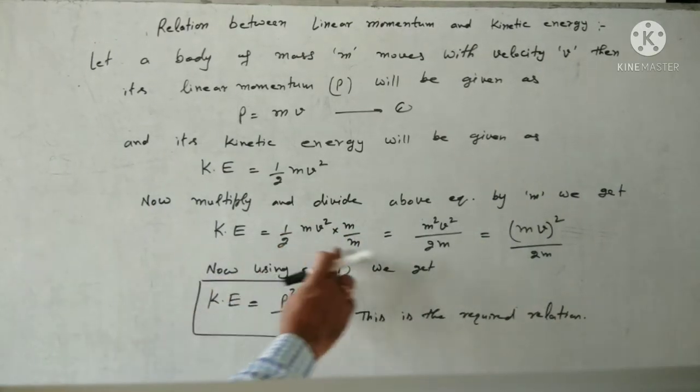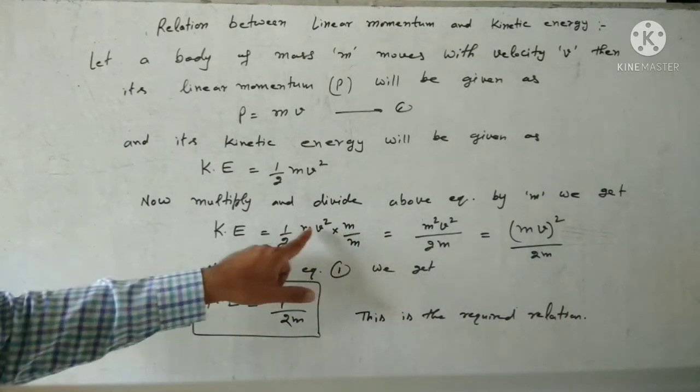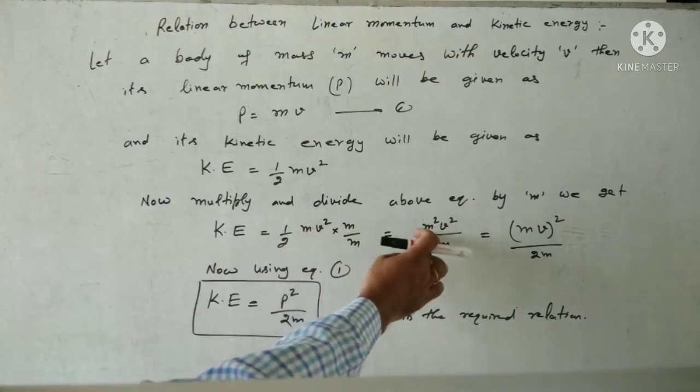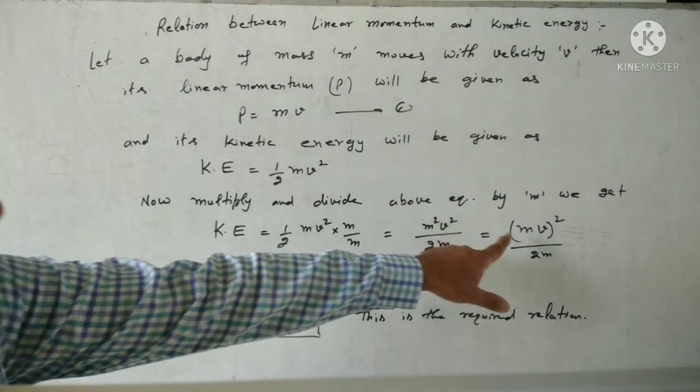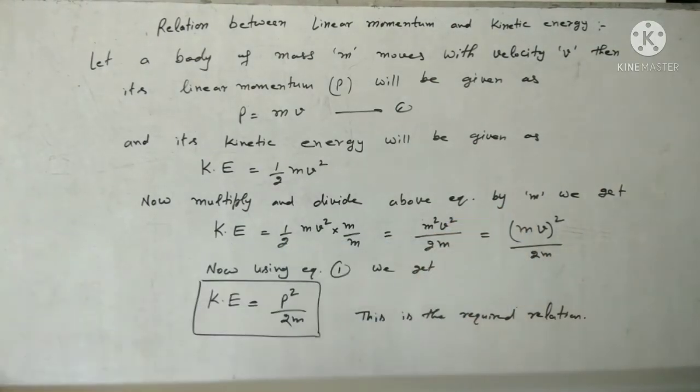So M into M gives M square V square divided by 2M. Now M square V square is the same as MV whole square.